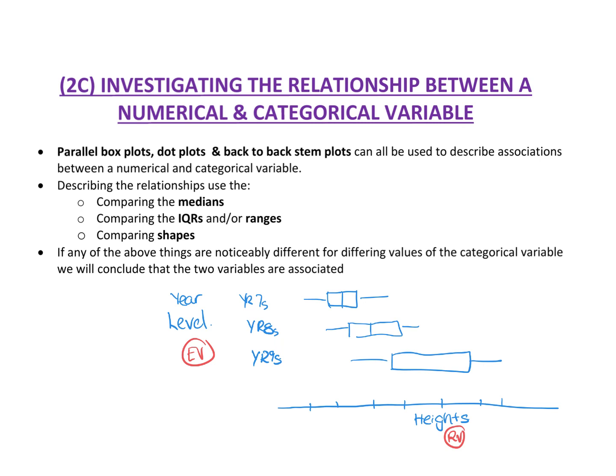When we compare the medians on a parallel box plot, we could simply say as the year level increased, the median height increased with this, this, and this. And then we would say therefore there is an association with it.